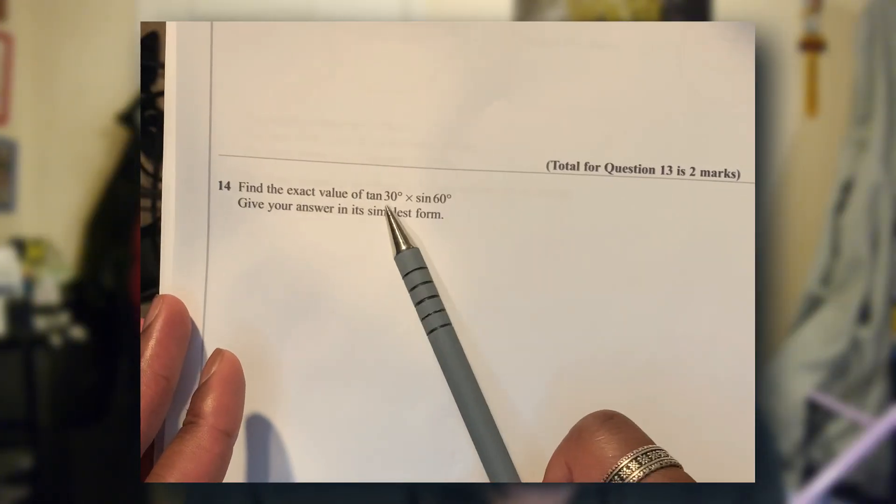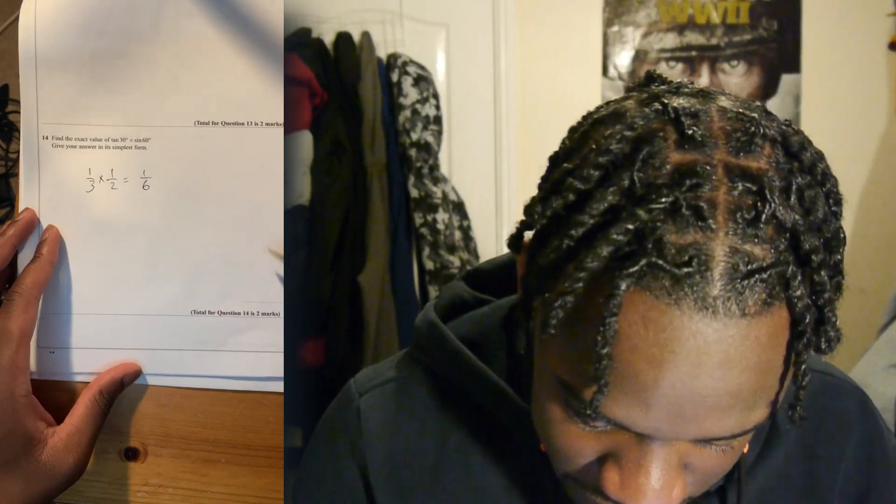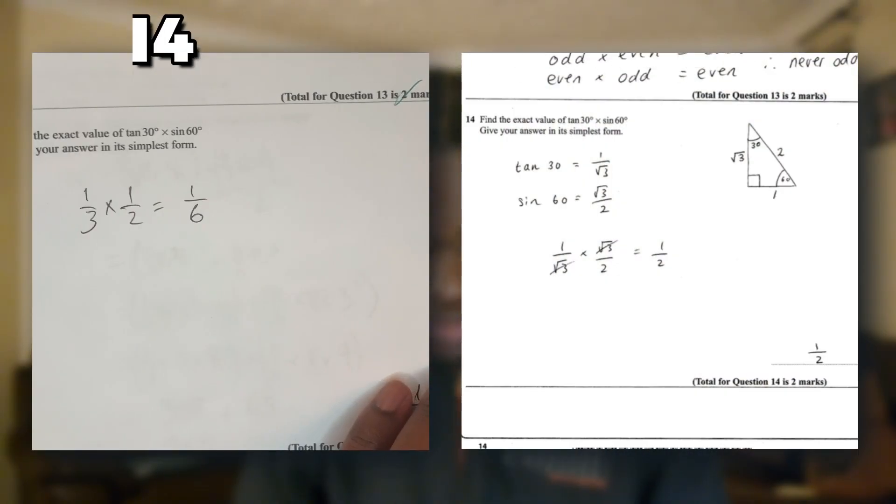Find the exact value of tan — I can't do this, because I don't remember what tan 60, tan 30, and sin 60 are. I think sin 60 is a half — there was a finger thing I liked. I'm going to go with that. The answer was a half for this one.